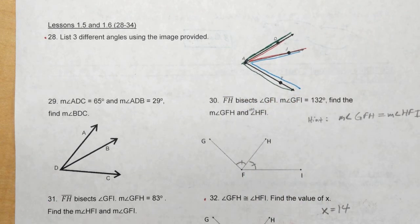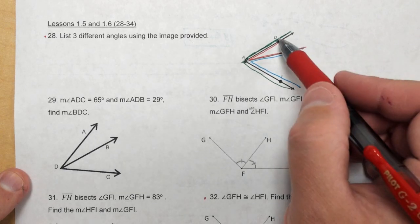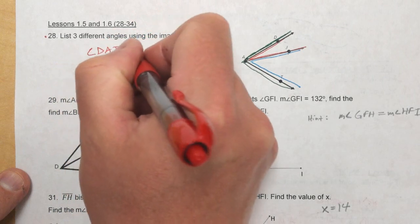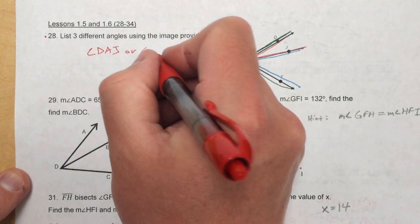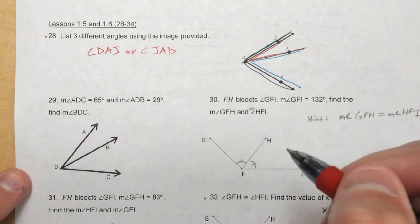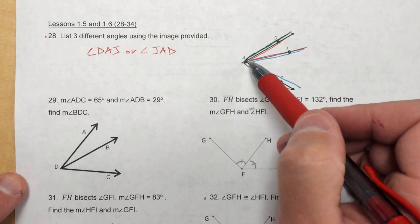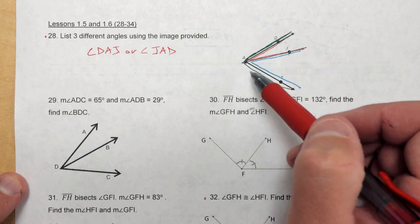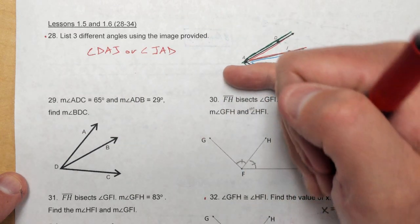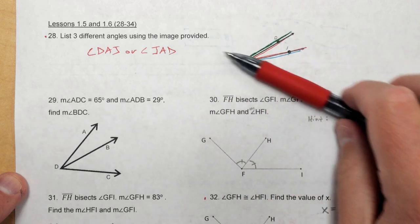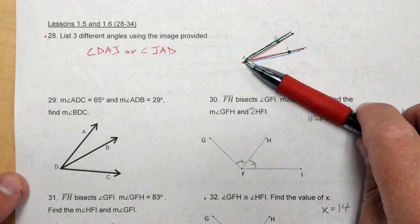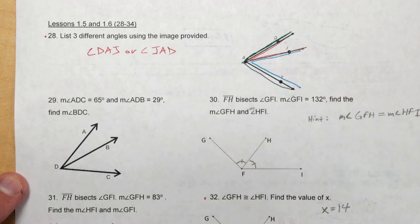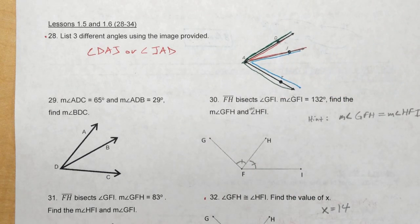So let's name those three angles. So I can name the one in red angle DAJ. Or you could flip the letters around and call angle JAD. That works. Now I cannot call this just angle A because angle A is the vertex of all three of these angles. So I can't name this using angle A. But had this just been the top angle of the one in red, I could have also called this angle A. But since this is part of more than one angle, I can't use just angle A. So that's the red one.